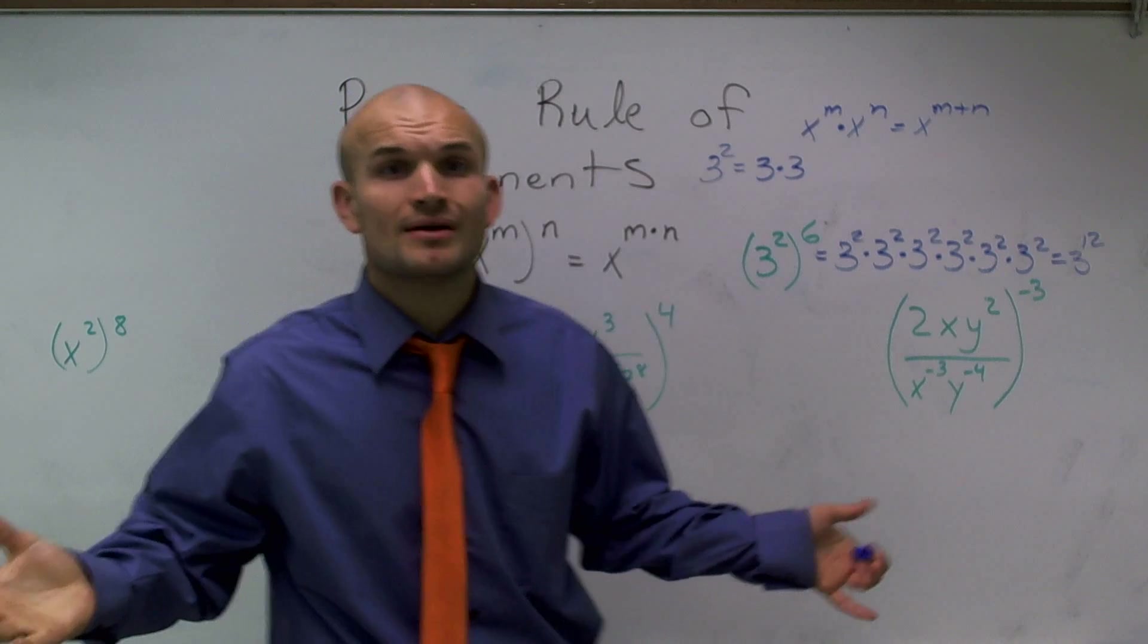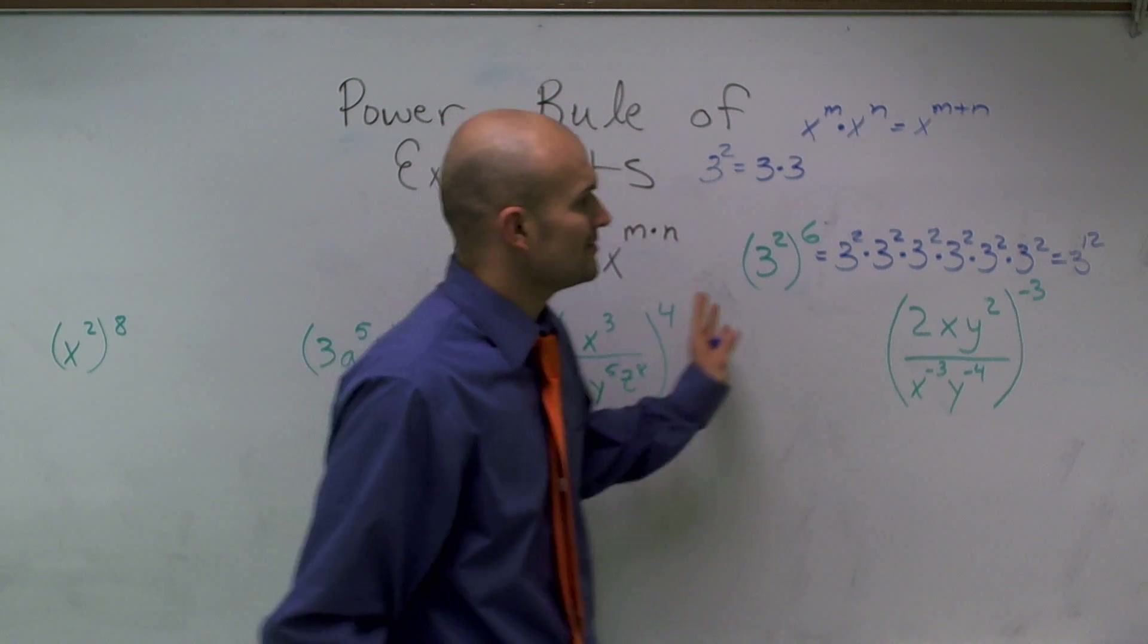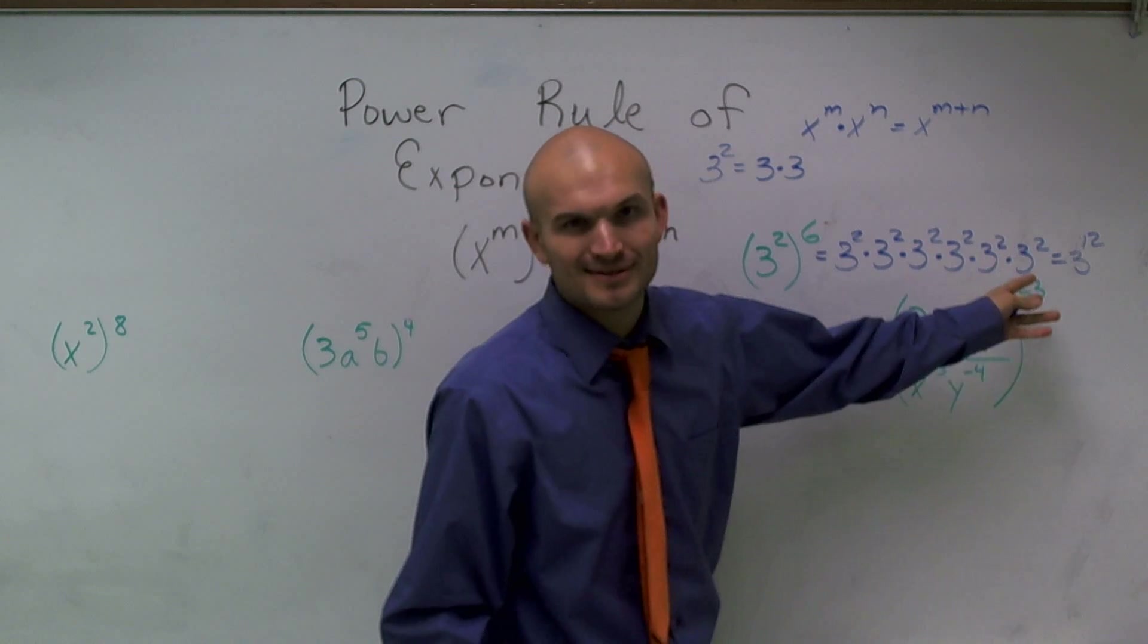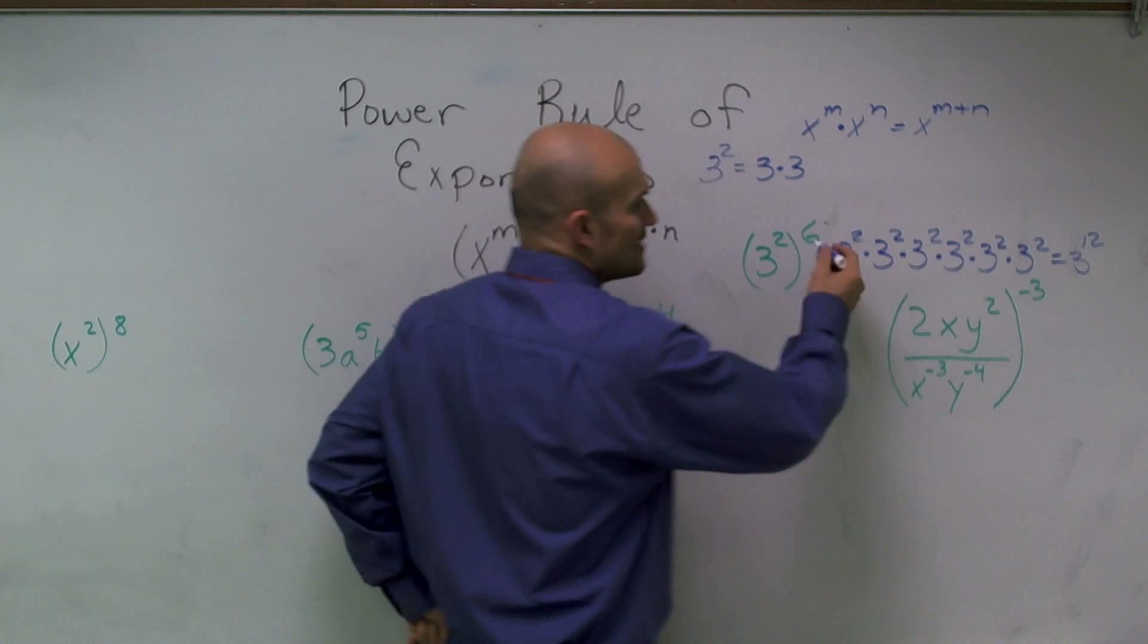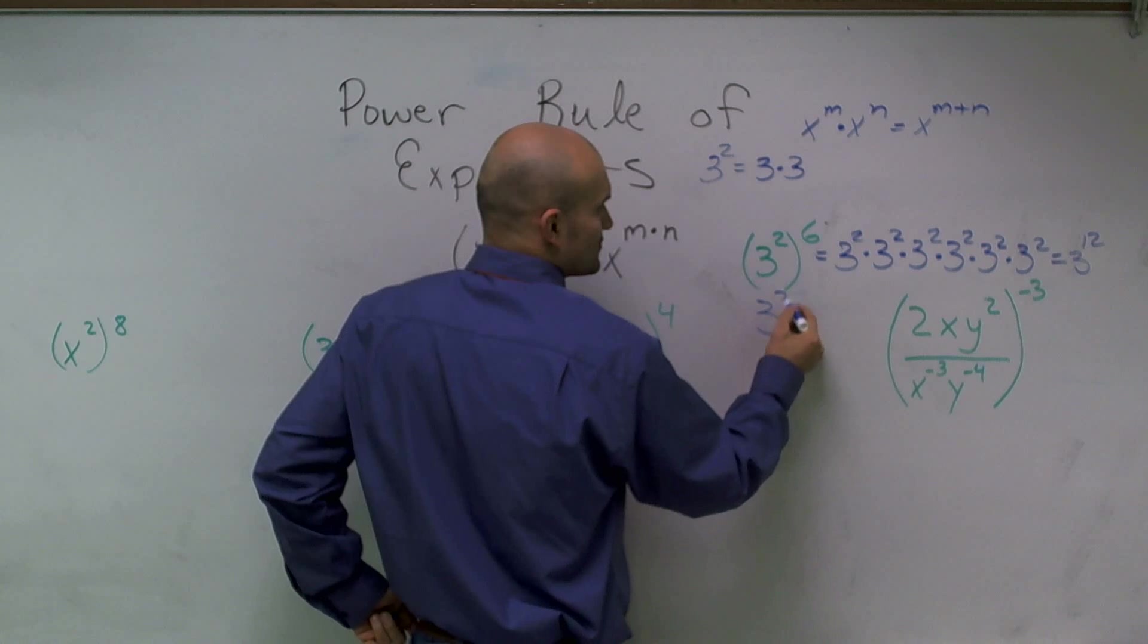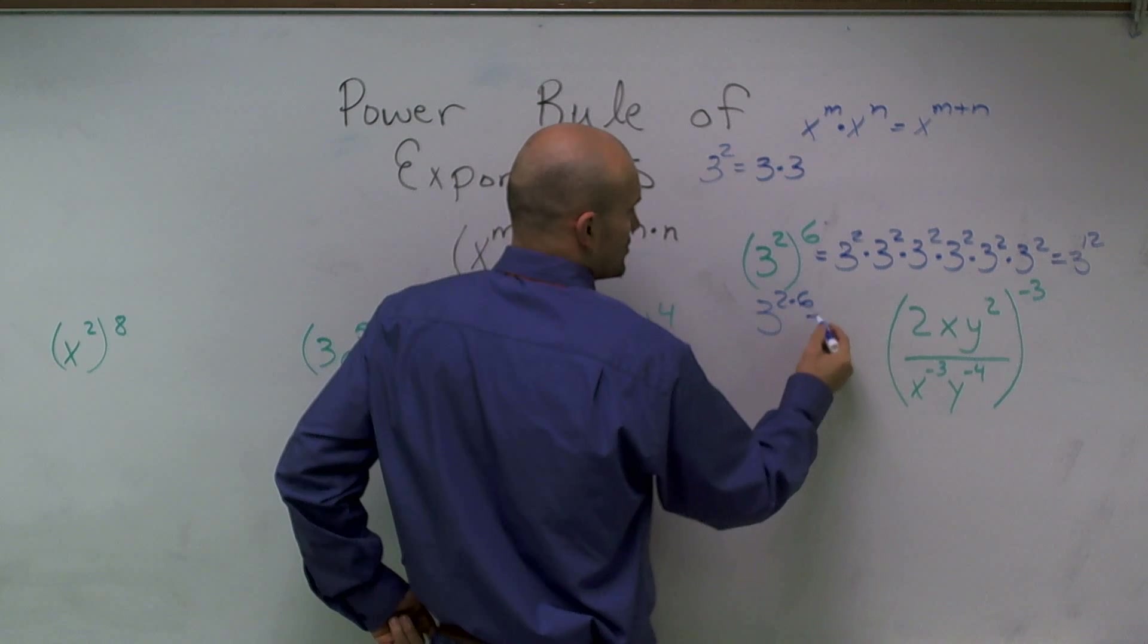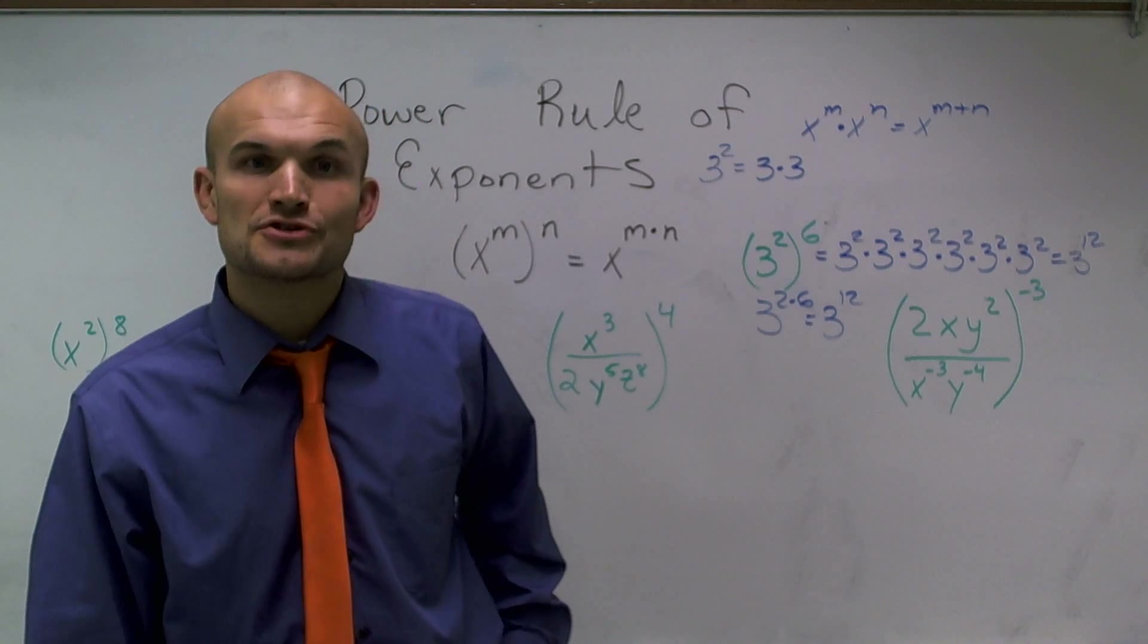Now, that's going to be a really big number. I can't calculate that in my head. However, you can do that in your own calculator. But what I want to show you is the shortcut. Instead of doing all this, we can just say that whenever I have an exponent raised to an exponent, I can multiply 2 times 6, which equals 3 to the 12th power. So there's a shortcut.